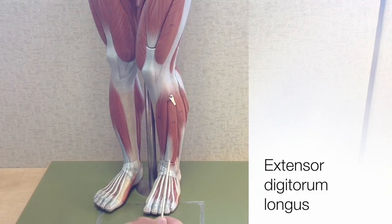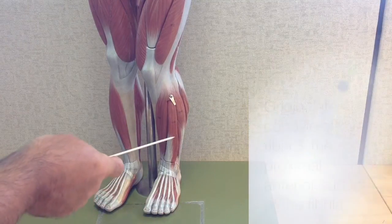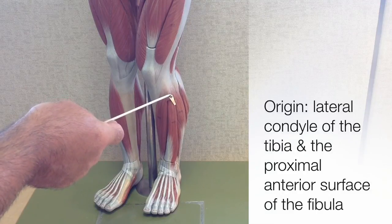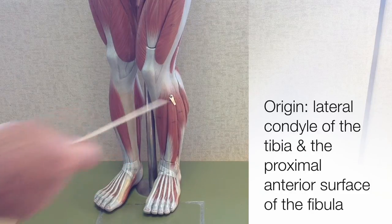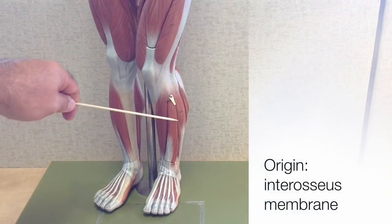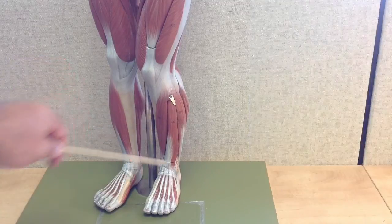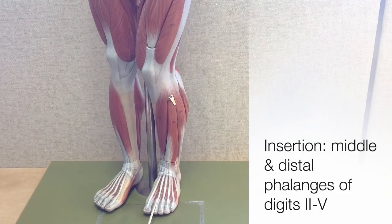Those tendons lead up to the extensor digitorum longus. Its origin is on the lateral condyle of the tibia, close to where this clip is, as well as the proximal anterior surface of the fibula. Like the tibialis anterior, it also has an origin on the interosseous membrane between the tibia and fibula. It inserts, with its four tendons, onto the middle and distal phalanges of digits 2, 3, 4, and 5.